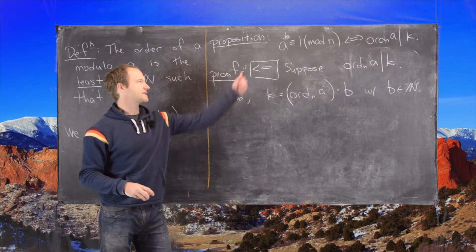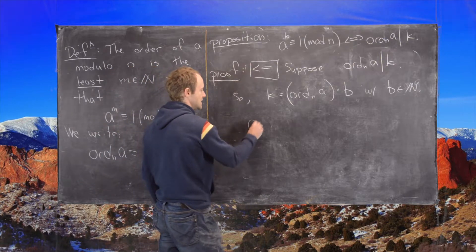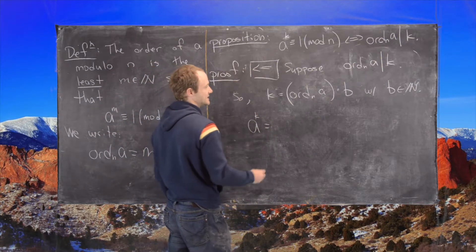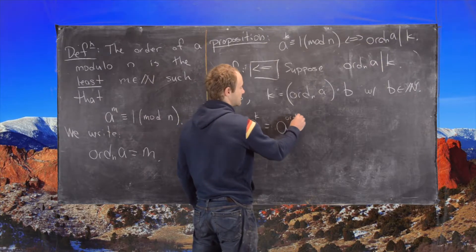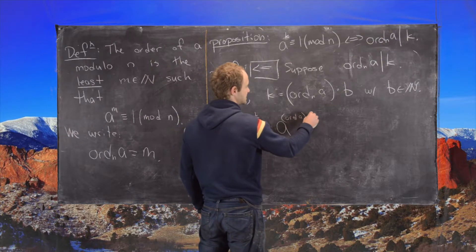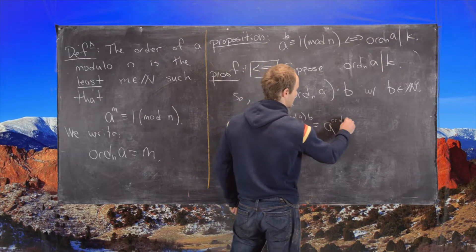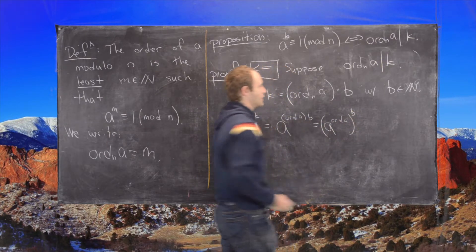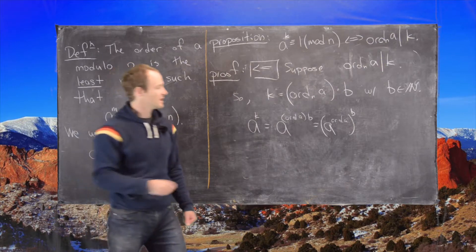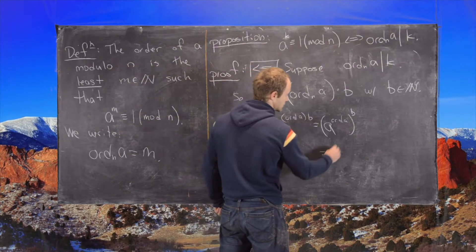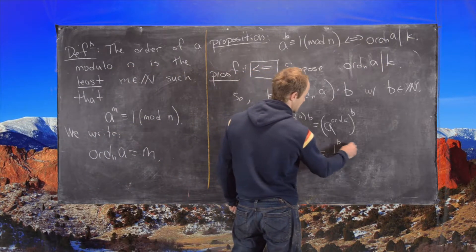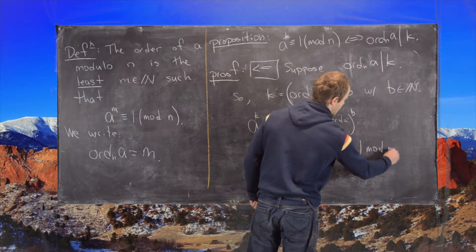Okay. Great. And so now let's calculate a to the k. So we have a to the k is the same thing as a to the order of a times b, which is a to the order of a to the b power. But again, that is equal to 1 to the b, which is congruent to 1 mod n.